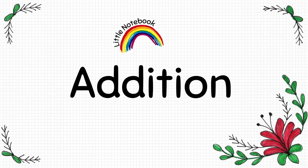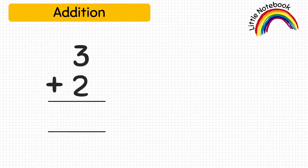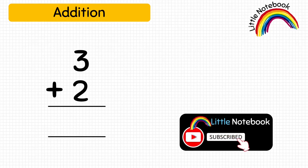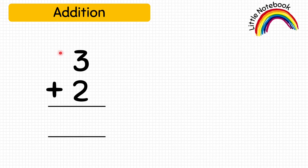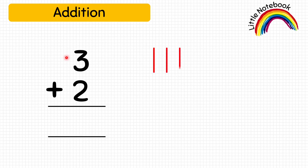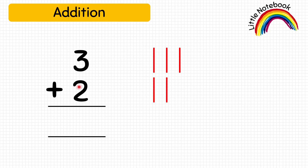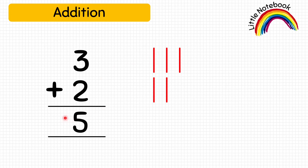Our last worksheet is Addition. Here we will do vertical addition of numbers without pictures. For example, three plus two — kids, you can represent three as three lines, so draw three lines here, then represent two as two lines, draw two lines here. Count all the lines: one, two, three, four, five. So three plus two equals five. Teachers use this method to teach addition to kids in school as well.